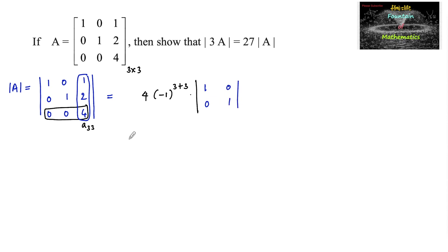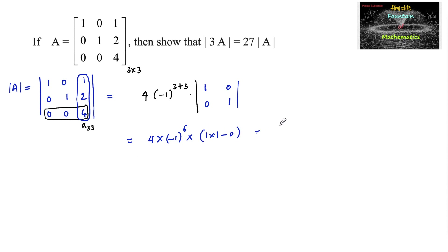This equals 4 times (−1)^6 times the determinant of [1 0; 0 1]. Since (−1)^6 = 1, and the determinant of that submatrix is (1×1 − 0×0) = 1, we get 4 × 1 × 1 = 4.